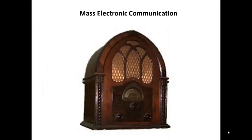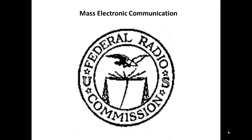Music, news, entertainment, and political speeches were all transmitted directly into people's homes. In 1927, NBC started two radio networks — Red and Blue — and the CBS Radio Network began. The Federal Radio Commission, established in 1926, and the Radio Act of 1927 regulated the use of the radio spectrum.